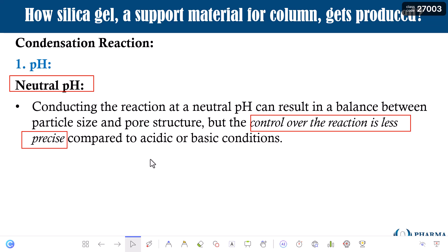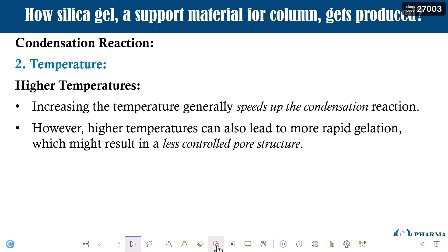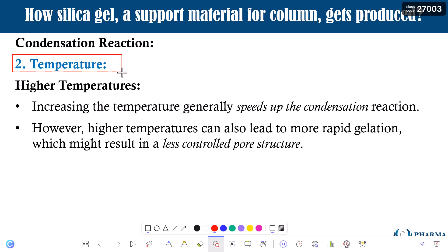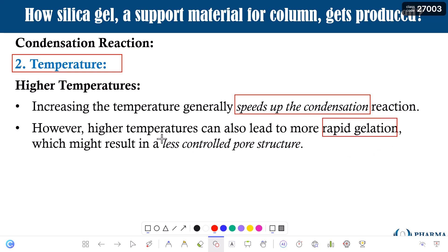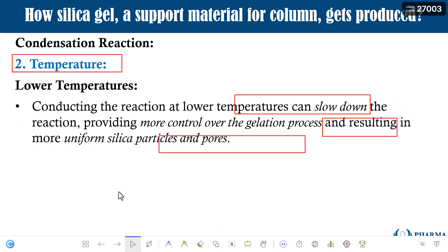The second important parameter is temperature. Increasing the temperature generally speeds up the condensation reaction. However, higher temperature can lead to more rapid gelation, which might result in a less controlled pore structure. Your pore structure can be weaker if you maintain high temperature — even though the rate of reaction is fast, you will have issues with the pore structure.